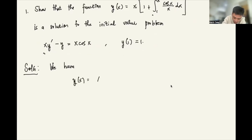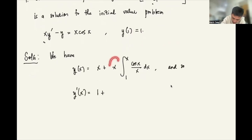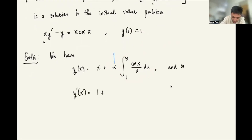So y(x) equals x plus x times the integral of cosine(x)/x dx from 1 to x. To get the first derivative, note that the derivative of x with respect to x is just 1. The second term is a product rule — this is one function (f) and this is another (g). The derivative is f·g' plus g·f'.